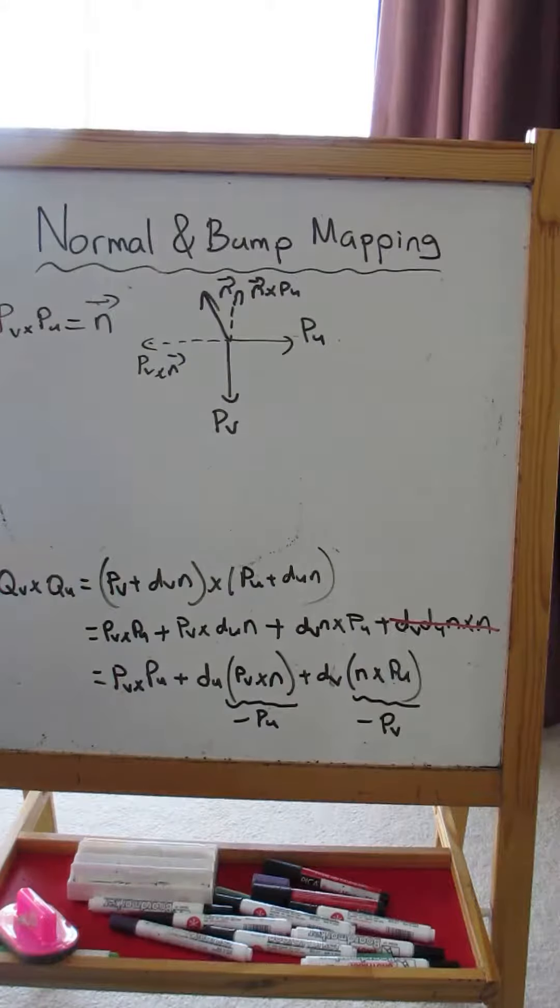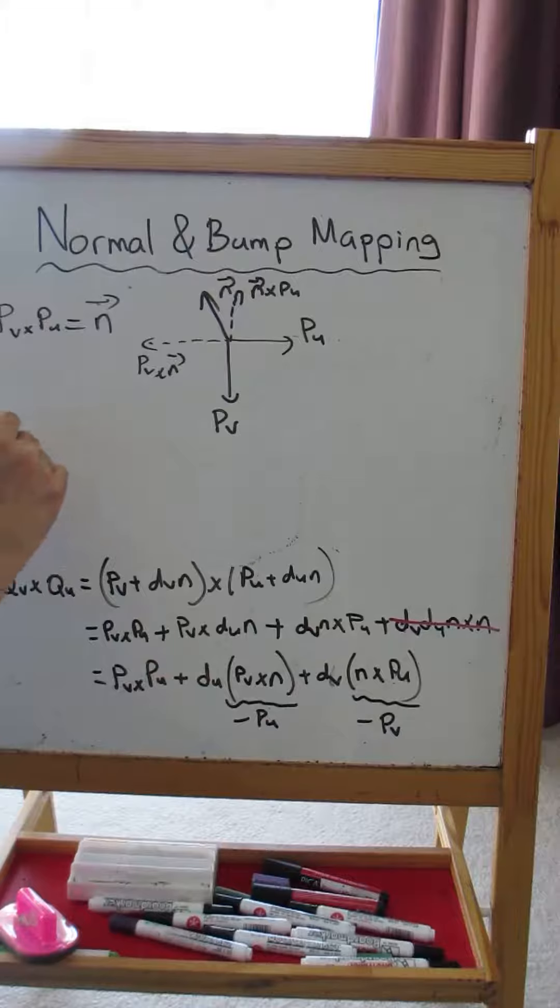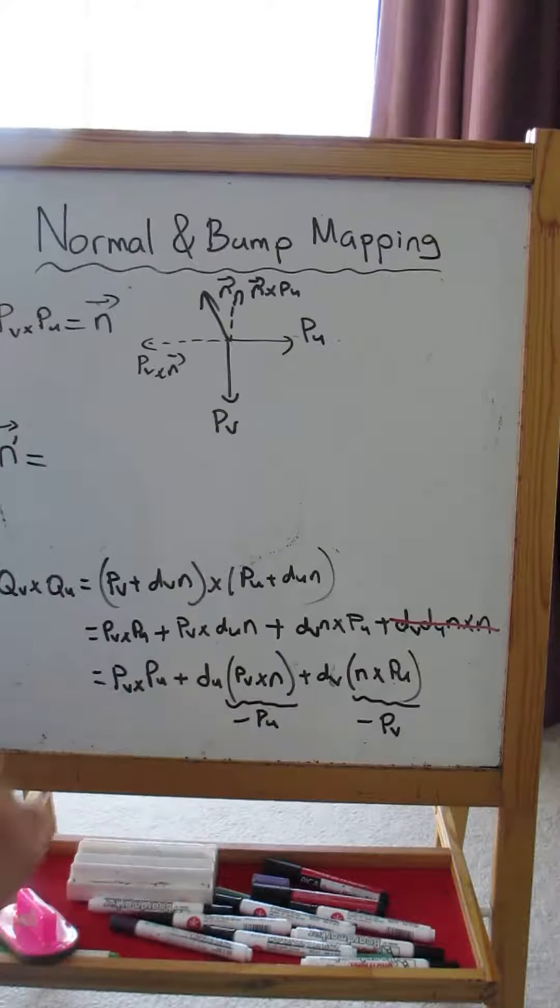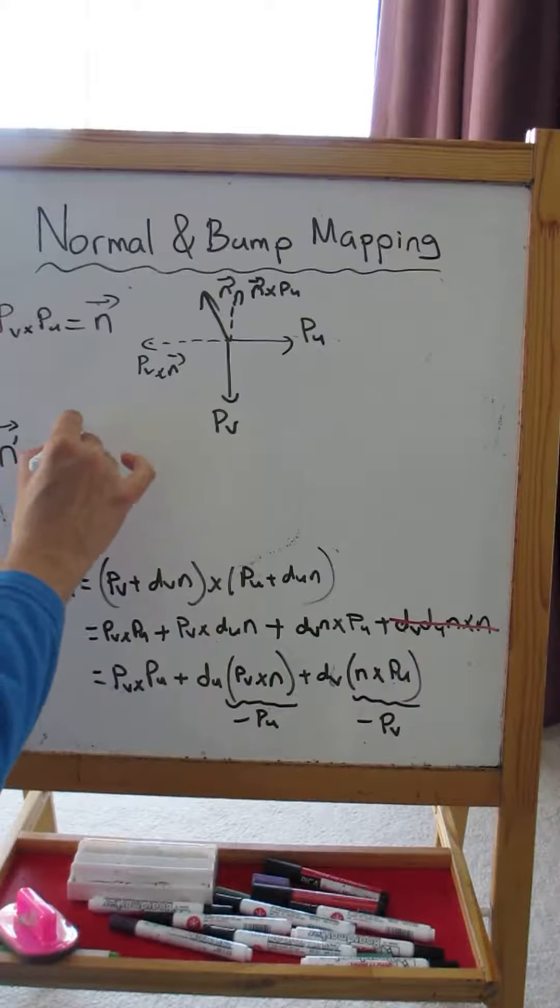So if we go ahead with our simplifications, QV cross QU, which is the modified surface normal n prime, is equal to PV cross PU, which is the original surface normal,